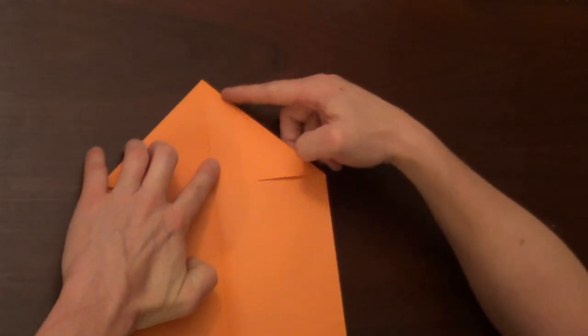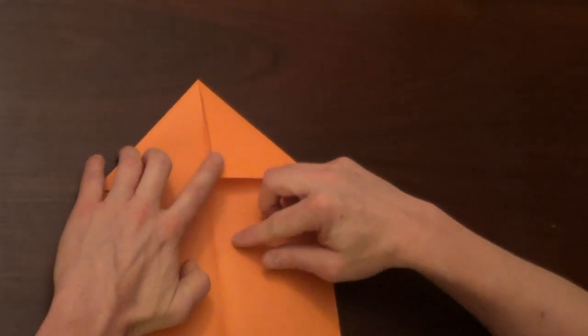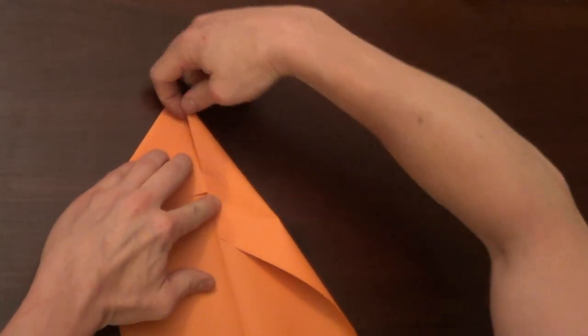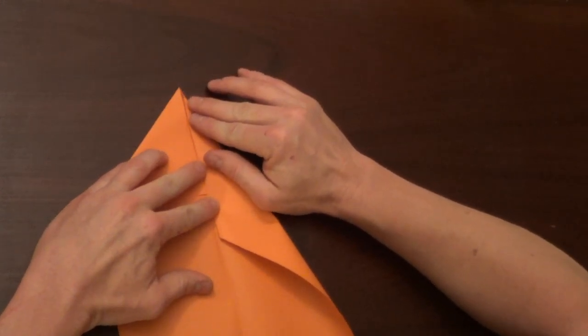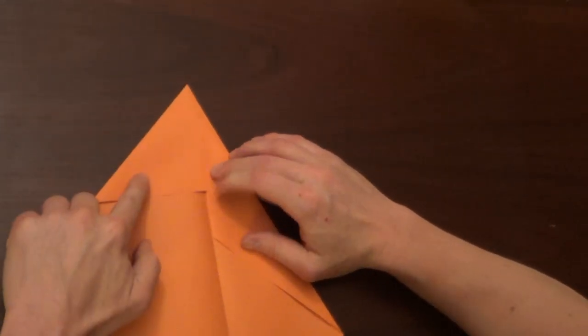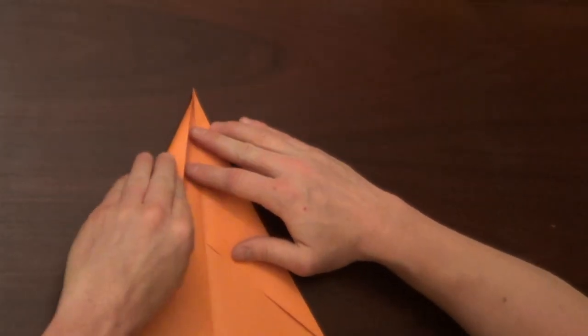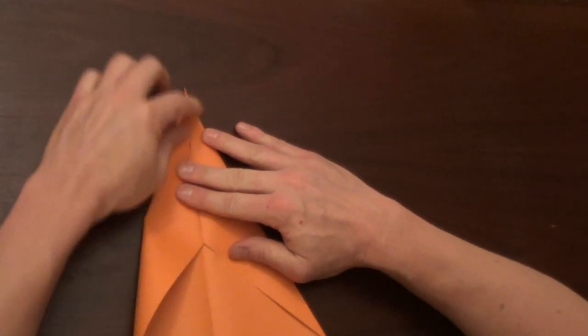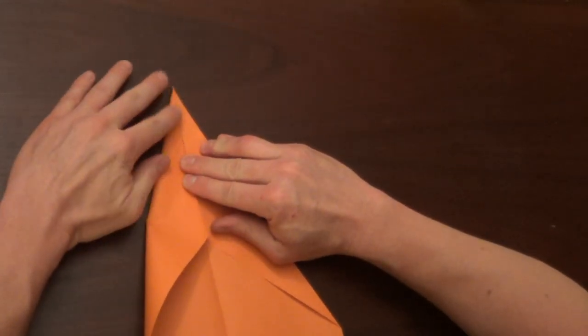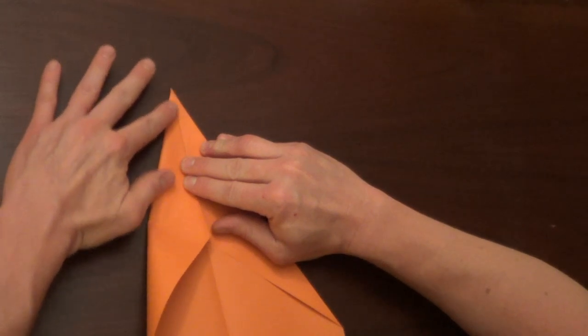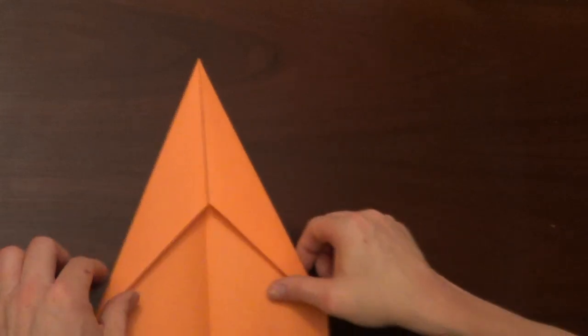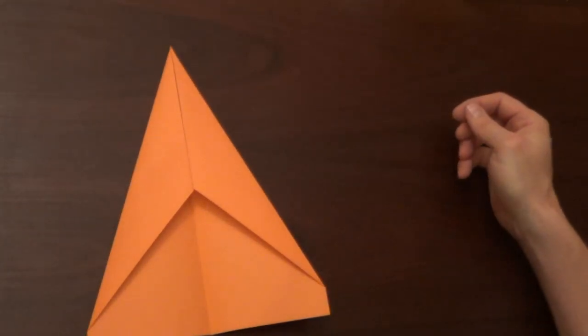Now what we're going to do is fold it again, making this edge right along the center crease. We're going to do the same to this side. This is a really simple paper airplane to make, it's not very difficult. Now our paper should look like this.